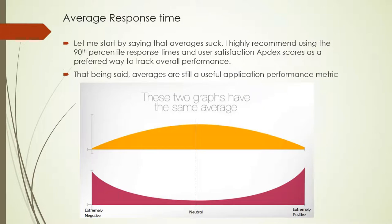We also saw that average response time, which we usually monitor, is not actually a good idea to use exclusively for reporting or judging application performance — we ideally prefer the 90th percentile. Looking at the graphs, both graphs show the same average response time, but the trends are completely different. One graph starts low, peaks in the middle, then decreases; the other starts high, decreases, then increases again. These two graphs represent two different trends but the average is the same, so we should not completely rely on average response time.